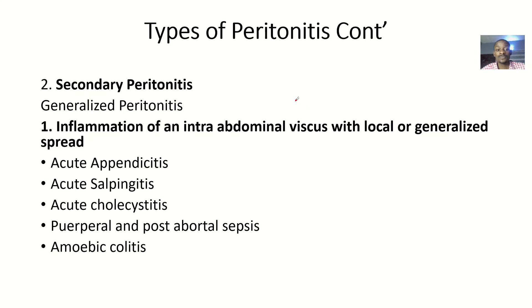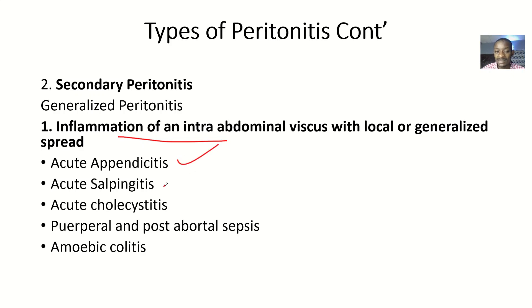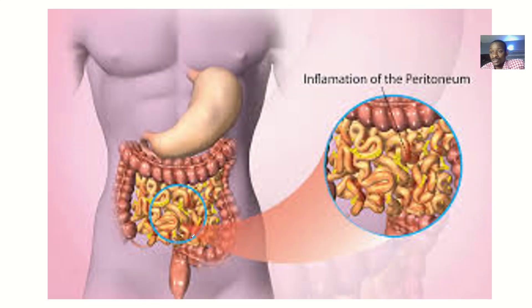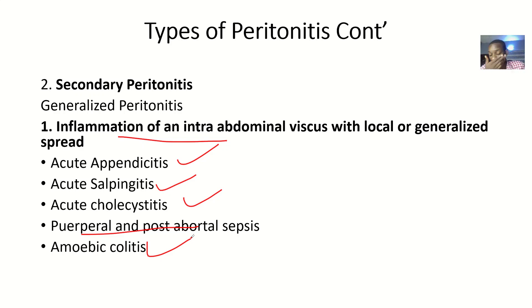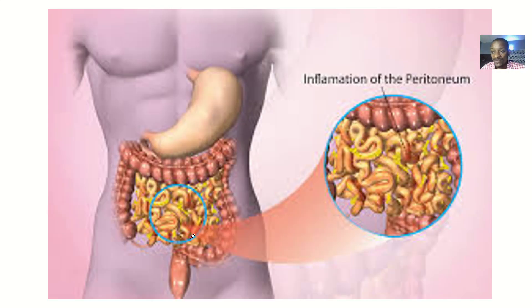For secondary peritonitis, the cause is outside the peritoneum — something else is causing it. Possible causes include inflammation of an intra-abdominal organ or viscus. Examples include acute appendicitis, acute salpingitis, acute cholecystitis, puerperal and post-abortal sepsis, and amoebic colitis. Because the peritoneum is lining these organs, it can become inflamed too.